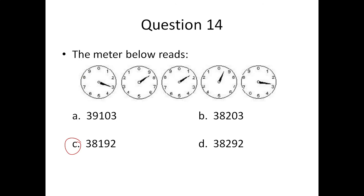Question fourteen: to answer this, you need to know how to read meters. If the needle is directly on a number, you call that number. If it's between two numbers, you always call the lower number. If it's between 0 and 9, you pick 9 because 0 is seen as 10. If it's between 0 and 1, you pick 0. So your answer would be 38192, which is C.